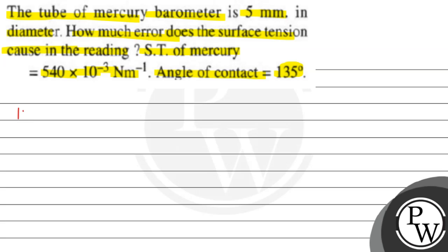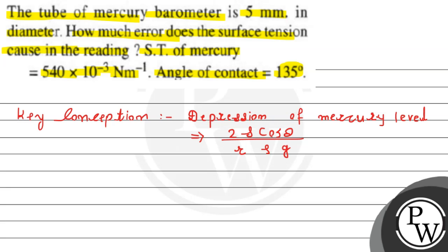Let's start with this solution. Before that, let's talk about the key concept which we are going to use here. We need to calculate the error in barometer reading, which is equal to the depression of mercury level. The formula is: depression of mercury level = 2S cos θ / (r ρ g). This is the concept we will use.